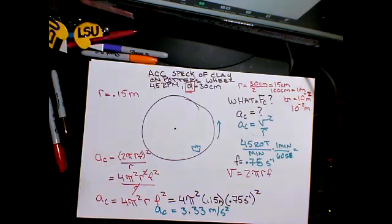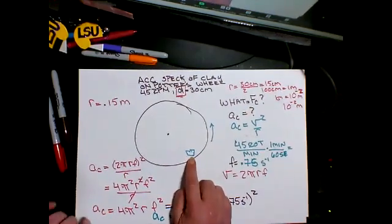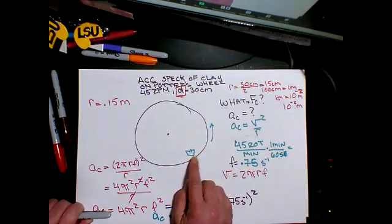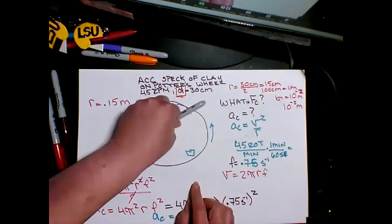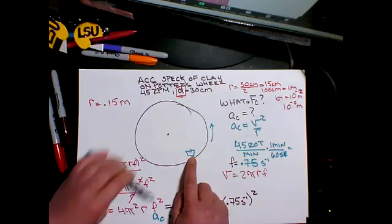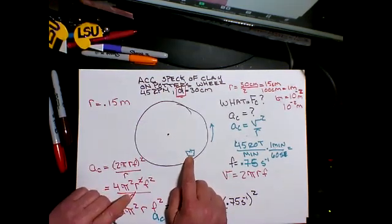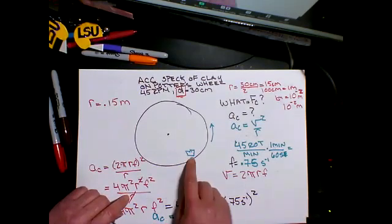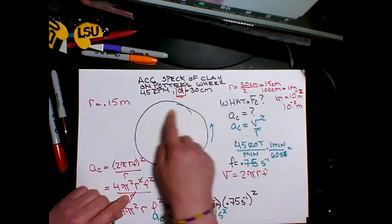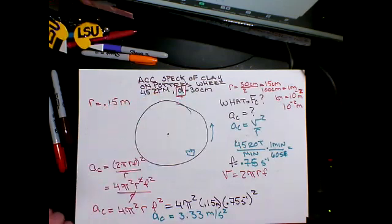The second part of the question asks: what is the center-seeking force? Let's think about it. It's spinning this way. If I suddenly turned this into a sheet of ice, would this speck of clay still be hanging out there? The answer is no - if I remove friction, it has nothing to hang on to. Right now friction is the only thing keeping it moving, accelerating it. So my force of friction would be my center-seeking force.